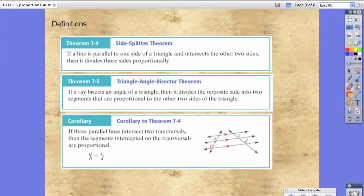So first of all is the side splitter theorem. It says if a line is parallel to one side of a triangle and intersects the other two sides, then it divides the sides proportionally.